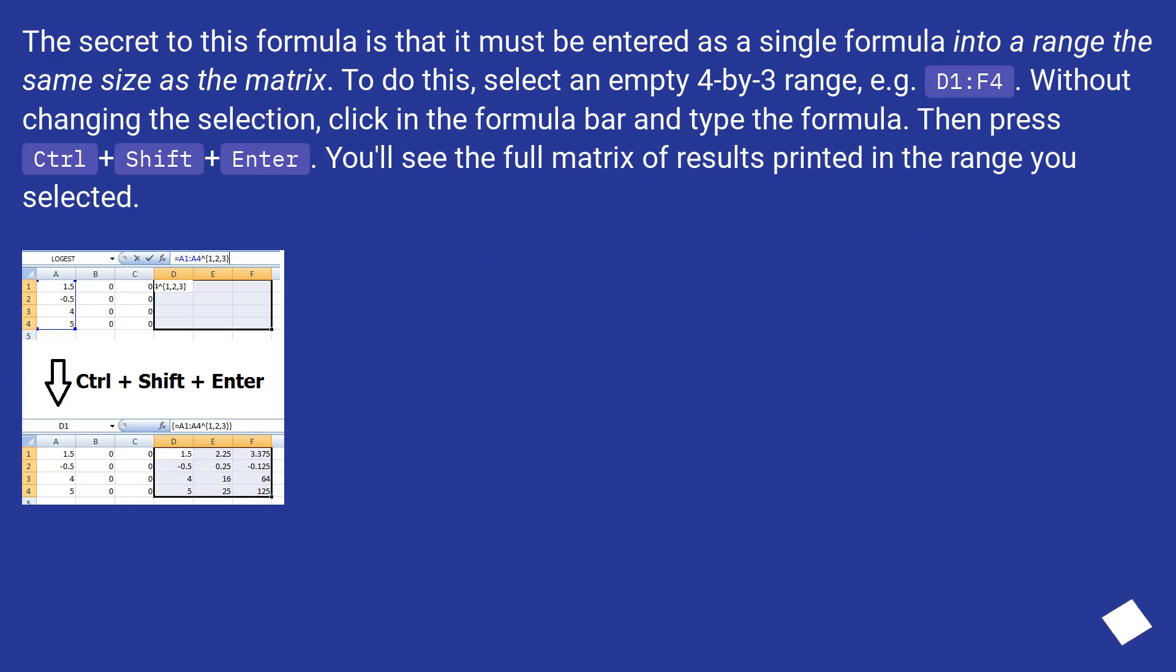The secret to this formula is that it must be entered as a single formula into a range the same size as the matrix. To do this, select an empty 4 by 3 range, for example D1:F4. Without changing the selection, click in the formula bar and type the formula. Then press Ctrl+Shift+Enter. You'll see the full matrix of results printed in the range you selected.